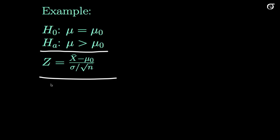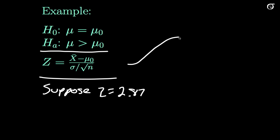Suppose, for the sake of argument, in one of our examples we have a z-value of 2.87. Here's our standard normal distribution. This z-statistic will have a standard normal distribution in the event the null hypothesis is correct. If we look at our alternative hypothesis, values in the right tail of this distribution will give evidence against the null in favor of the alternative. If mu is indeed greater than mu-naught, we would expect this z-statistic to be large, or tend to be larger than a random sample value from the standard normal distribution.